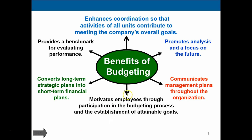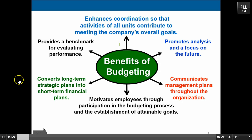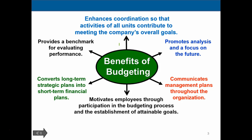Here's a flow chart of the things that a budget can do for us. A budget enhances coordination so that activities of all units contribute to meeting the company's overall goals. One way to look at a budget is that it is a plan — we're going to look at past data and put together a formal plan to predict and aim towards goals that will help us achieve future goals.